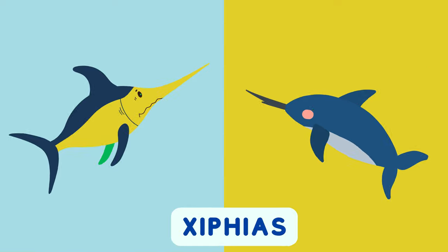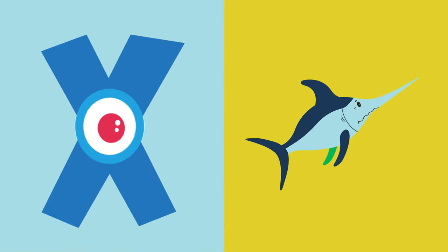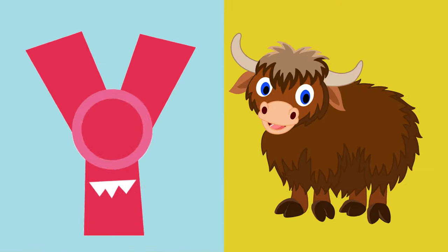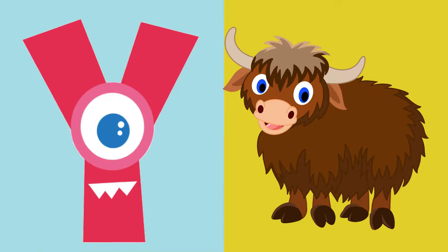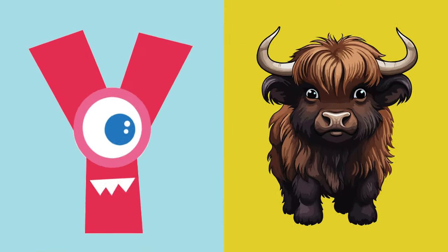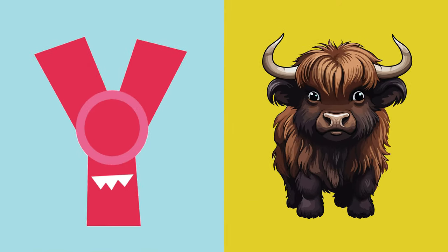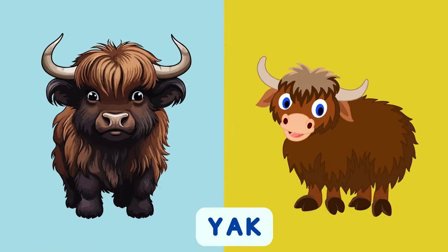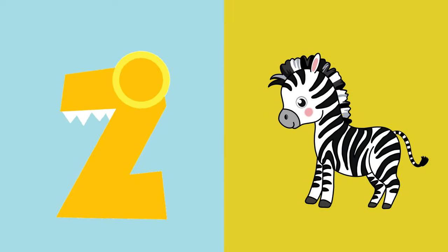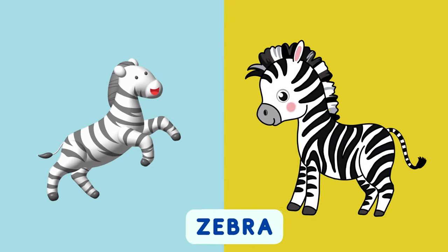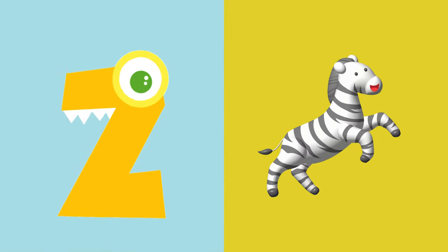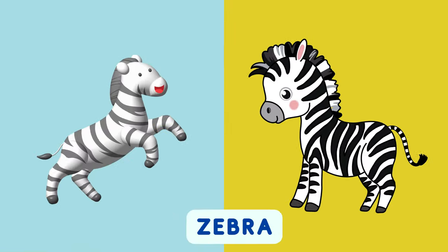X is for Xerus. X, X, X. Y is for Yak. Y, Y, Y. Z is for Zebra. Z, Z, Z.